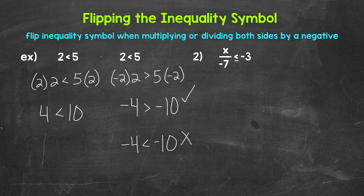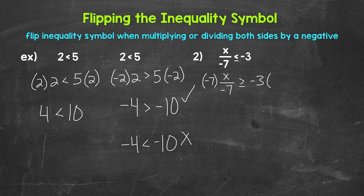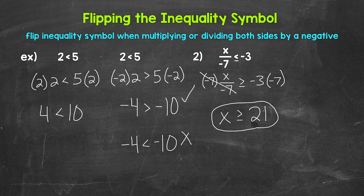Now let's apply this to number 2 that we already solved. We have x divided by negative 7 is less than or equal to negative 3. So we need to multiply both sides by negative 7. Since we are multiplying both sides by a negative, the inequality symbol needs to flip. On the left, these negative 7s cancel each other out, and x is now isolated. So we have x is greater than or equal to. And on the right, negative 3 times negative 7 gives us 21. So x is greater than or equal to 21.